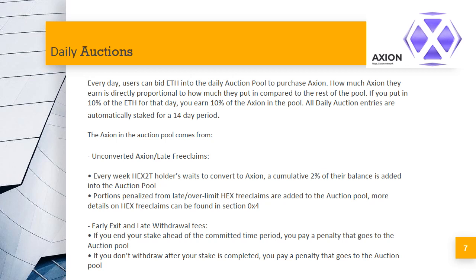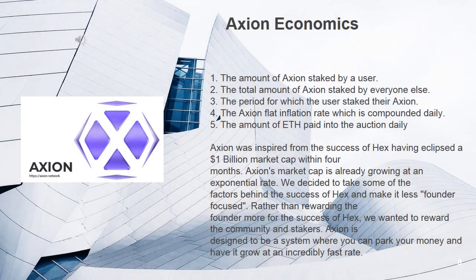80% of the ETH paid in the auction is then used to hyperdrive both the Axion token and stakers' earnings. First, the ETH is used to purchase the tokens, boosting the token price, and then those tokens are distributed to stakers, creating a very strong positive feedback loop. Axion Economics.